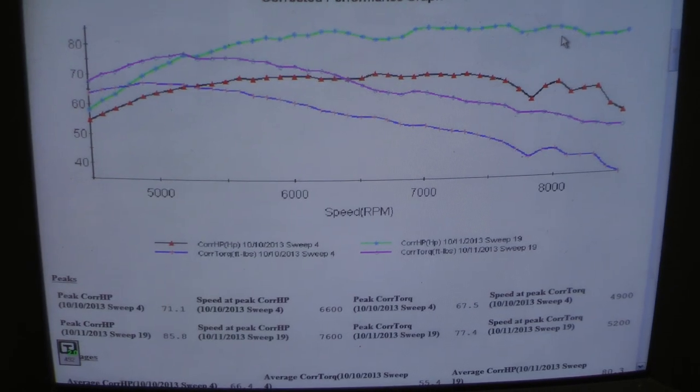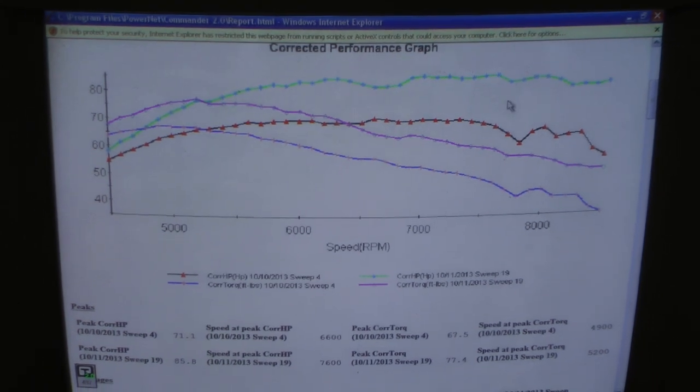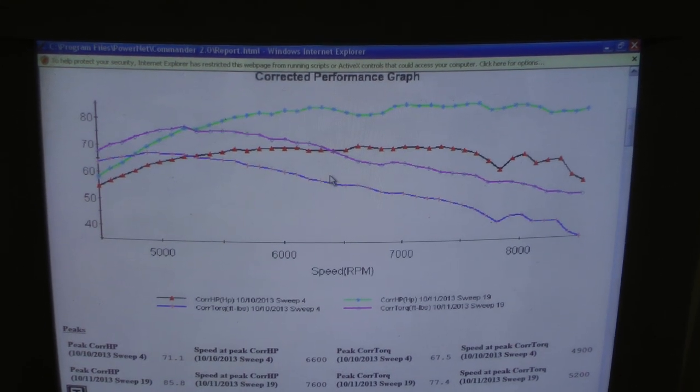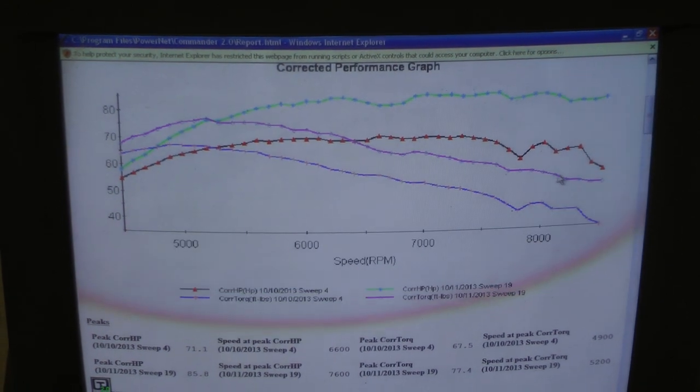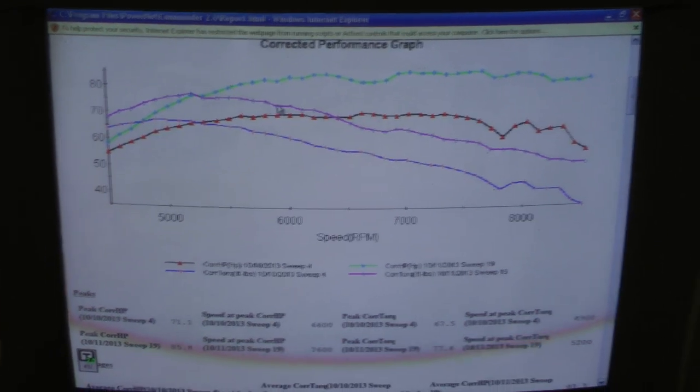Okay. Here's the dyno graph of the two engines. This blue line right here is the torque with the two barrel intake. Same carburetor both times. And this is the torque with the Midwest Super Cub intake.